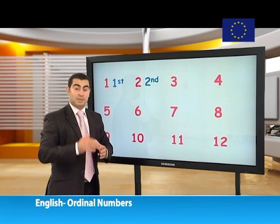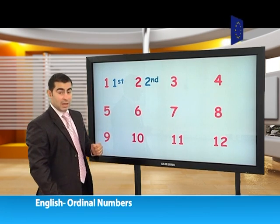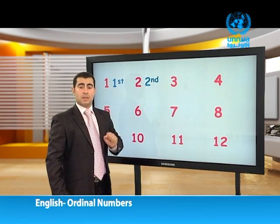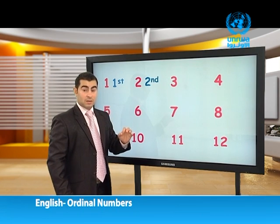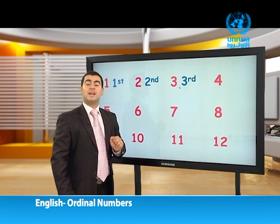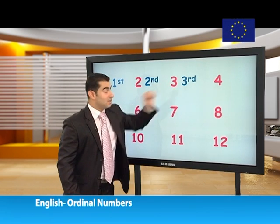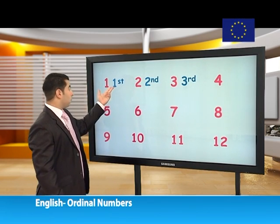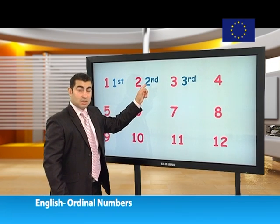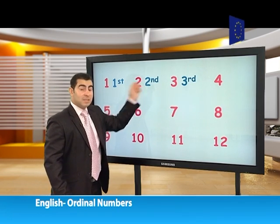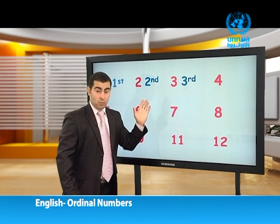We use ordinal numbers to show the order of things in a list or group. Let's continue: three — ثلاثة. When we say the third, we say 'third.' We added 'RD.' For first we added ST, for second we added ND, for third we added RD.